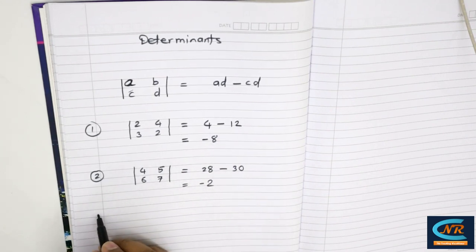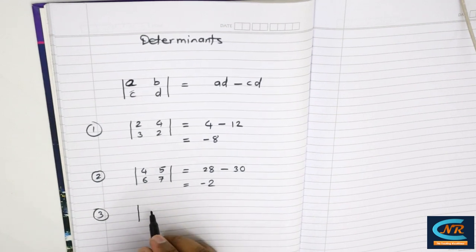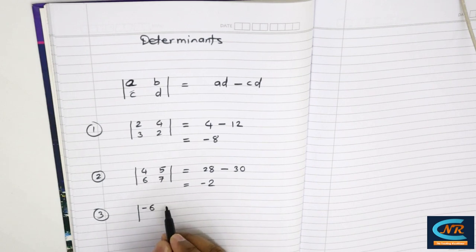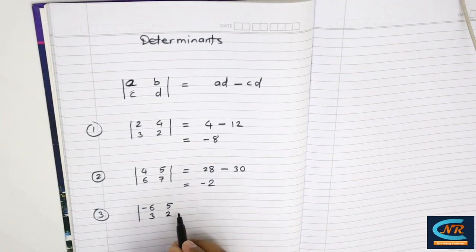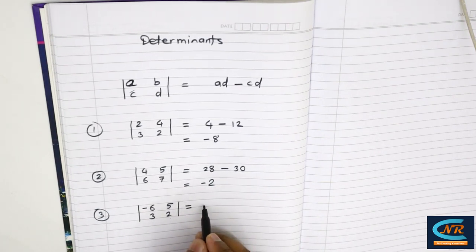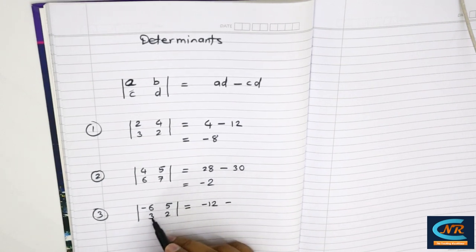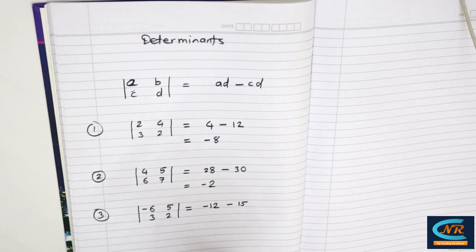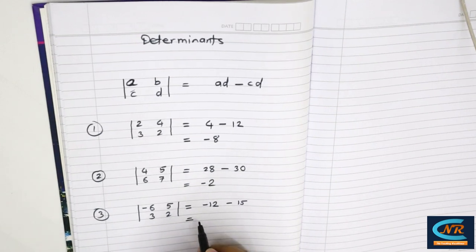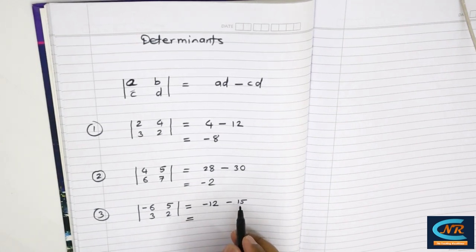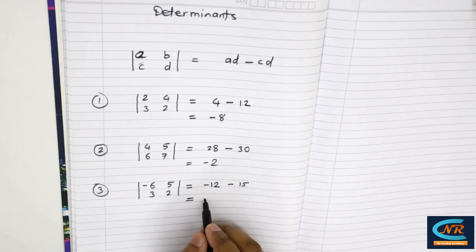Now consider another example: [-6, 5, 3, 2]. In this case, minus 6 into 2 = minus 12, and minus 5 into 3 = 15. So minus 12 minus 15 gives us the answer minus 27.